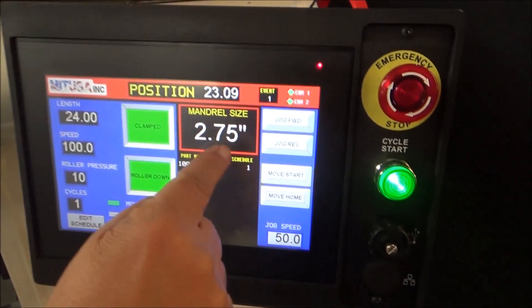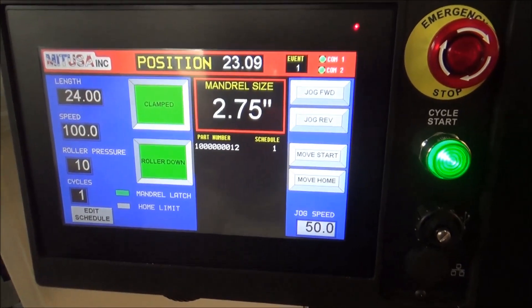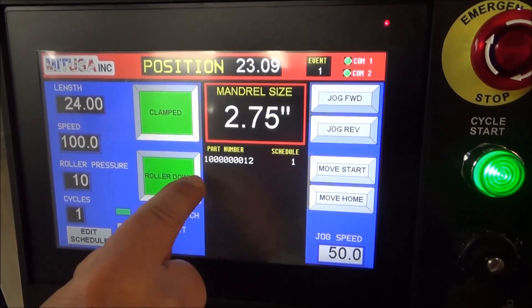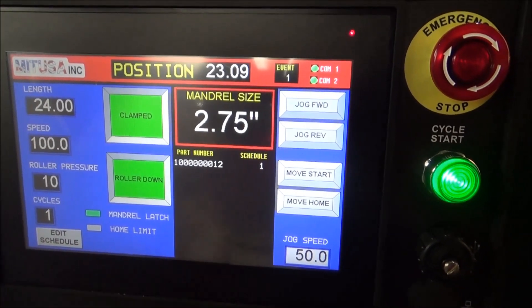The control shows you the mandrel that you have in here. Right now it's alerting me that I have a 2.75 inches diameter mandrel. We also have part number right here and it's in schedule one. We have 150 schedules.